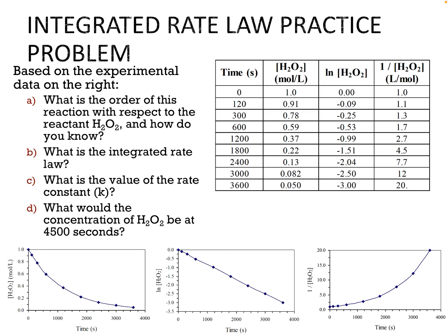Let's try another problem. Based on experimental data, I already took the natural logs and 1 over the concentrations and plotted them for you. What is the order of this reaction with respect to hydrogen peroxide and how do you know? What is the integrated rate law? What is the value of the rate constant K? And what would be the concentration at 4,500 seconds? Go ahead and pause here, try to figure out the problem, and then unpause to see the answer.